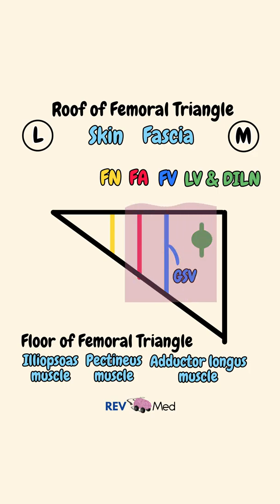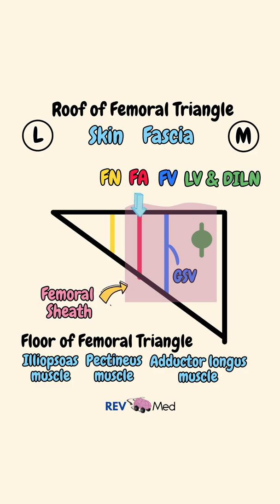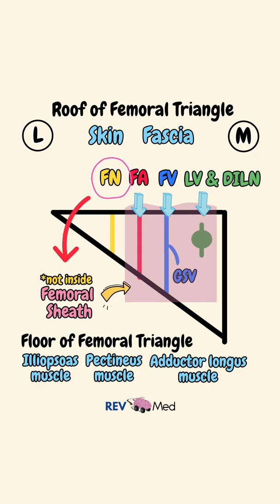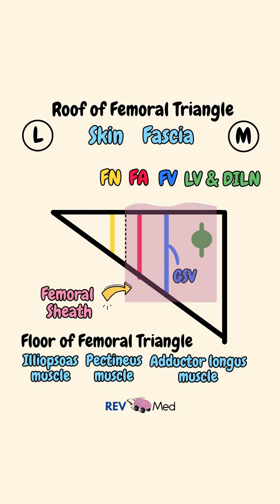The structures of the femoral triangle are covered by the femoral sheath. It covers the femoral artery, femoral vein, the empty space, and the lymph nodes. The femoral nerve is not inside the sheath.